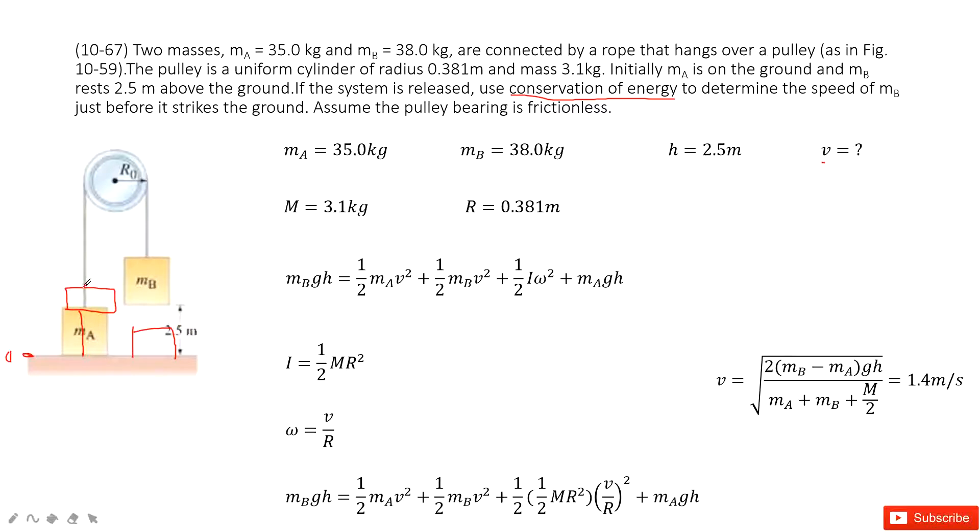So finally, it comes to this one from there to there. And we know, finally, we have the velocity for object a, object b, and the rotational motion for this pulley, and the potential energy for ma, g, h. Agree?